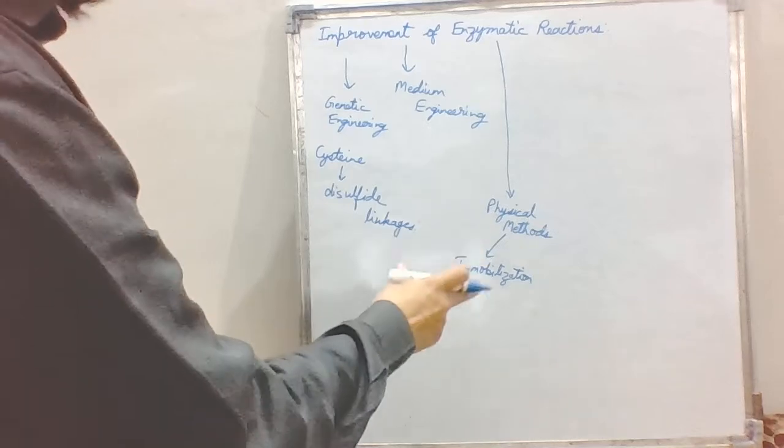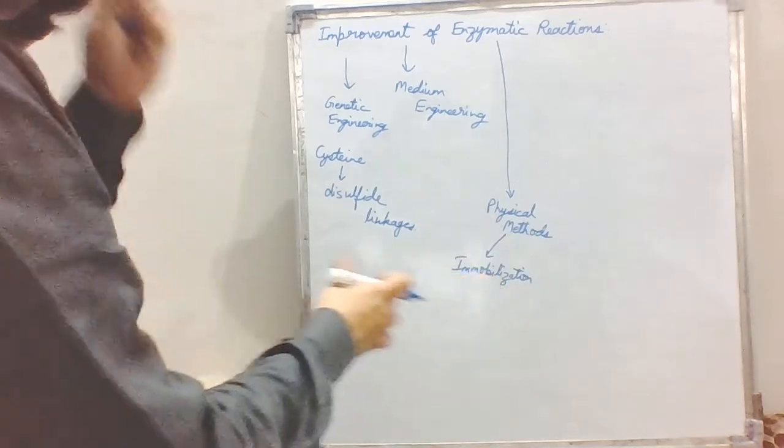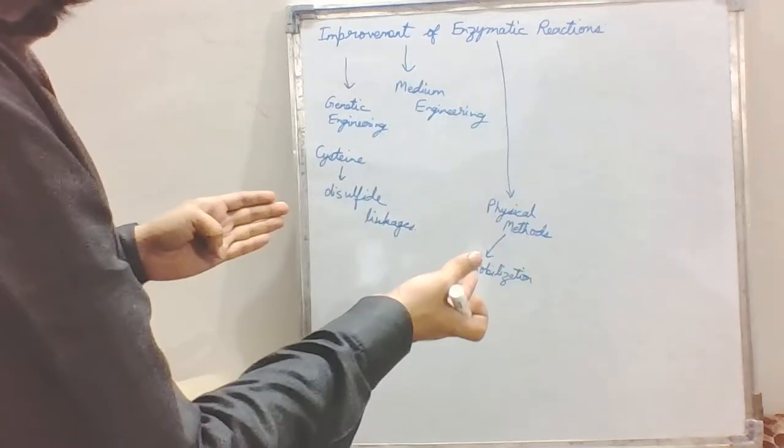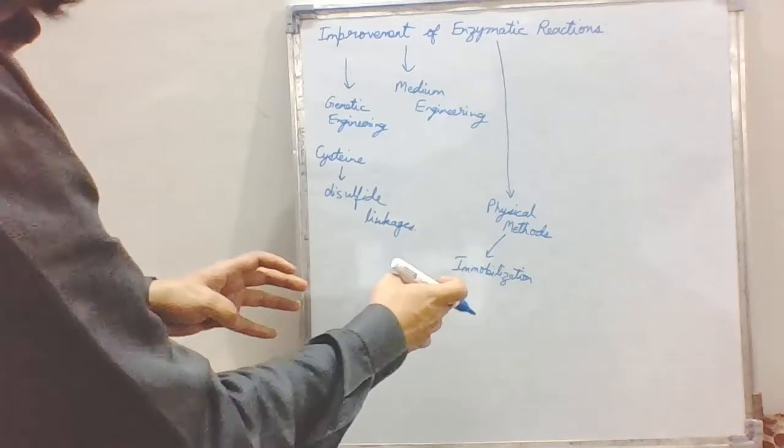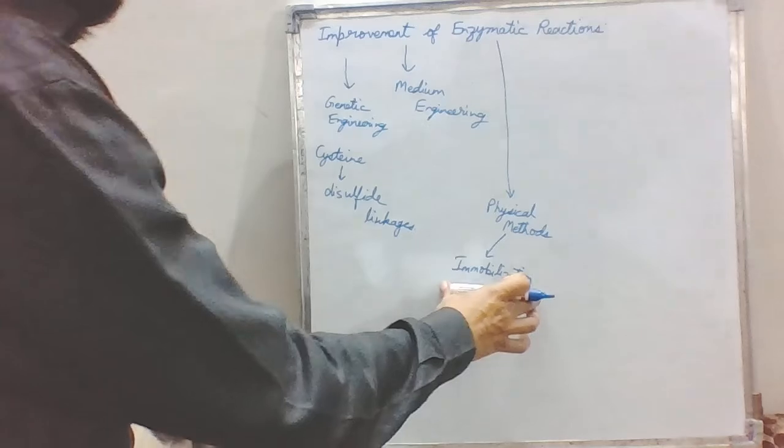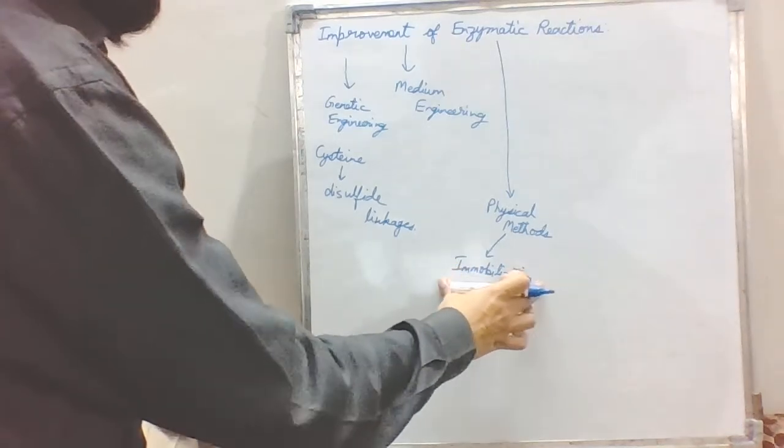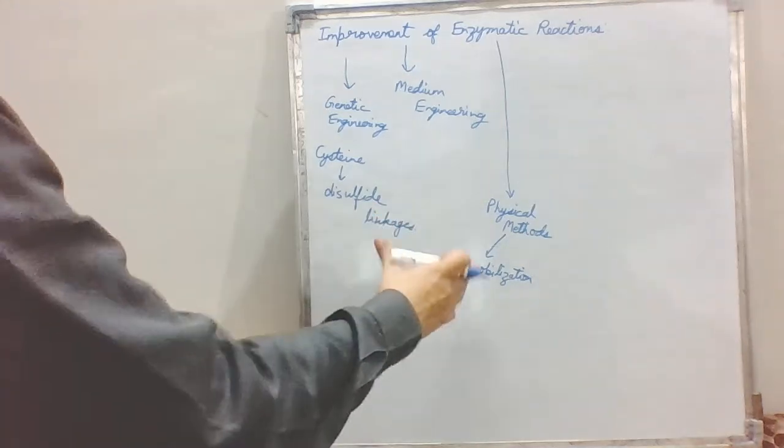We can use immobilization for designing our own process, our own industrial process. If we have very harsh conditions for the enzyme, we can design an immobilization technique in which the enzymes, after partitioning of the medium properties, have the optimum condition available for the enzyme to react. Intelligent immobilization can impart very fruitful results.